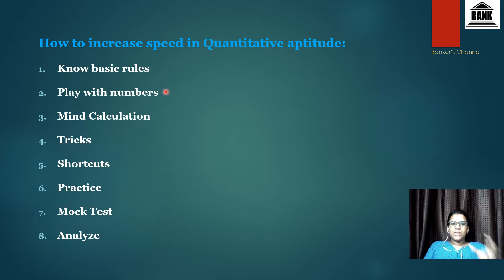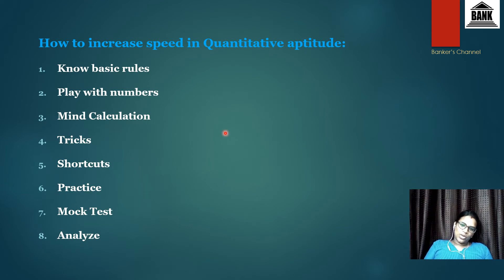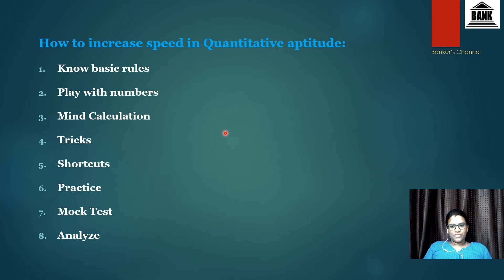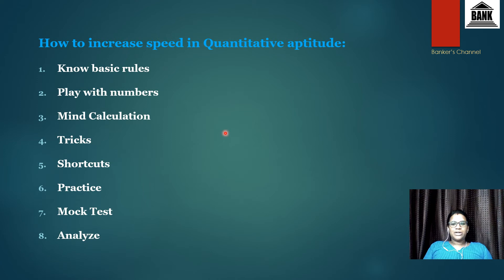This will increase your speed and improve your mental calculation. Next, practice mind calculation instead of using pen and paper for every small calculation. For example, 41 plus 42 is 83 — instead of writing it out, which takes 45 seconds to 1 minute, try to do it in your head. Playing with numbers will improve your mental calculation so you don't need pen and paper for small calculations.